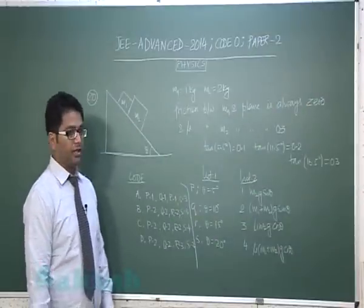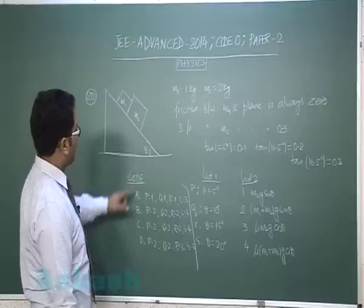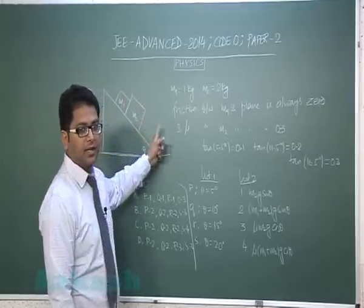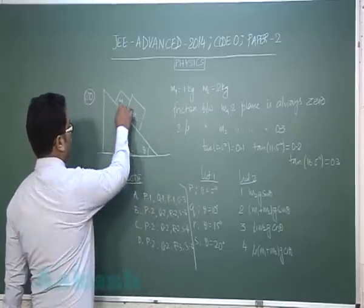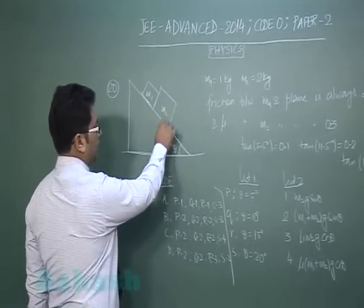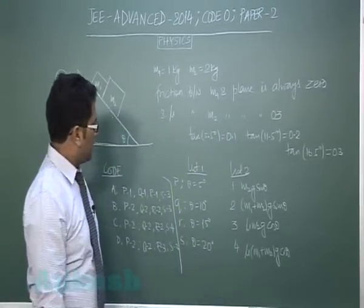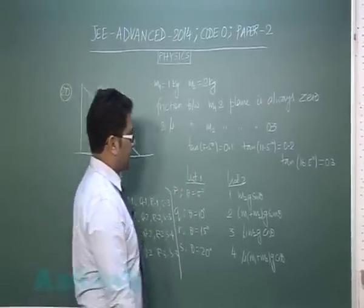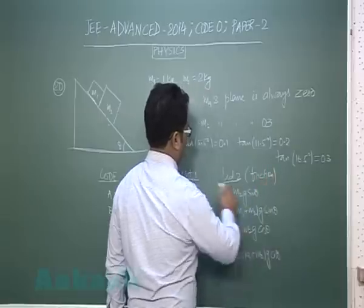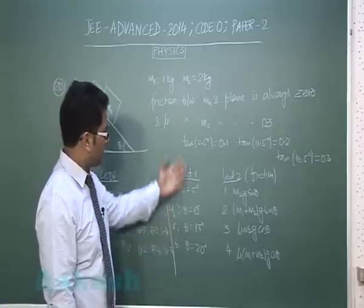Question number 20, the final question, is from Newton's laws of motion. A fixed inclined plane with two masses, 1 kg and 2 kg, with some manipulation. Friction between M1 and the plane is always 0, while between M2 and the plane mu is given as 0.3. List 1 gives the angle and list 2 gives the value of friction. We have to see what would be the value of friction, whether static or kinetic, depending on the different angles.